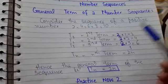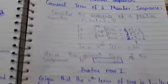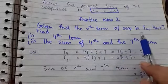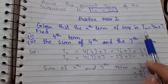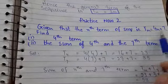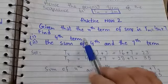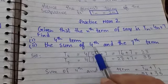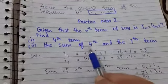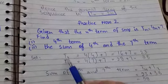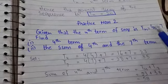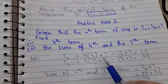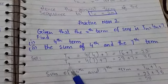We will understand this concept with the help of an example — Practice Now 2. It states that given the nth term of the sequence is Tn = 4n + 7, we have to find out the 4th term and the sum of the 4th and the 7th term. To find the sum, we first find T4 and T7. So T4 = 4 × 4 + 7 = 16 + 7 = 23.